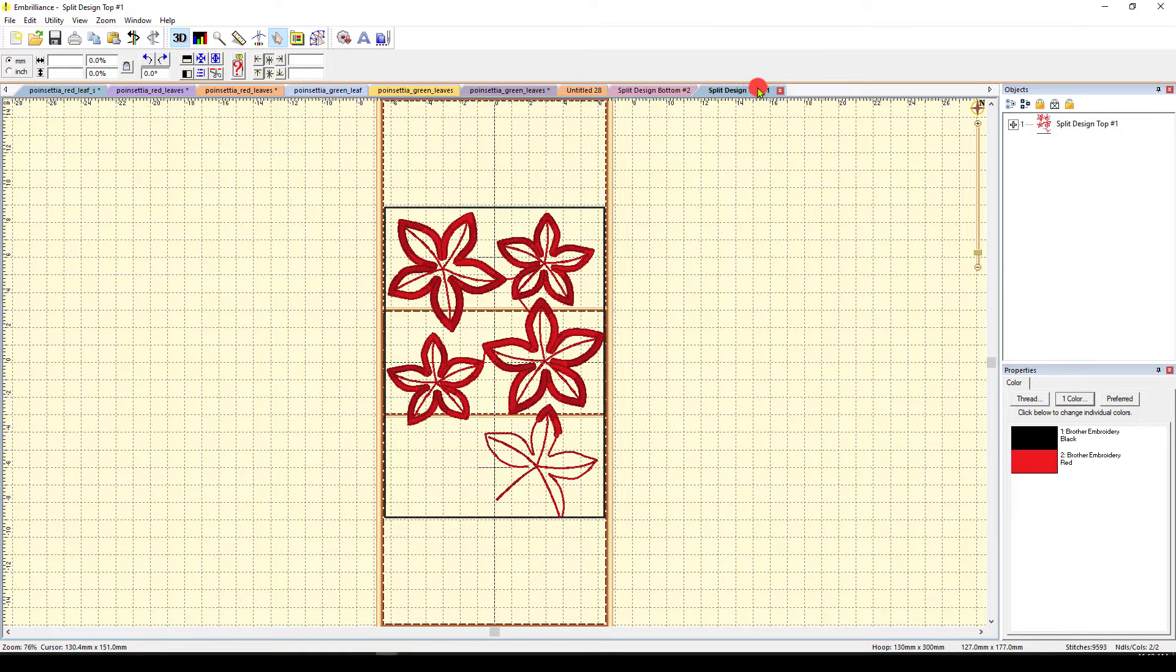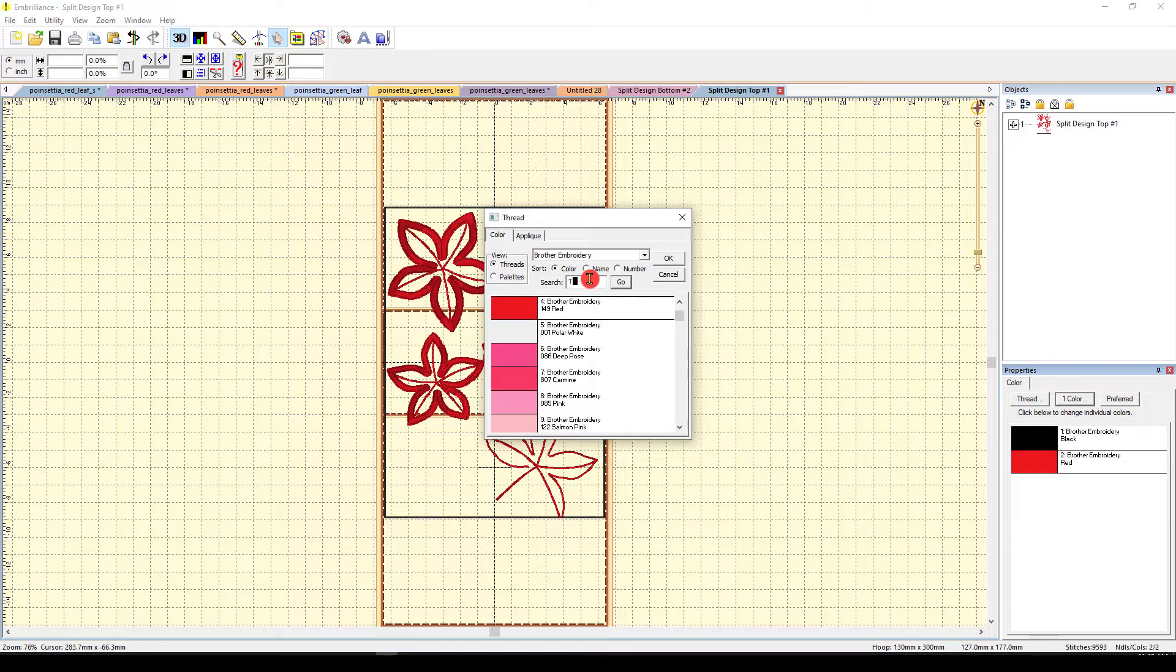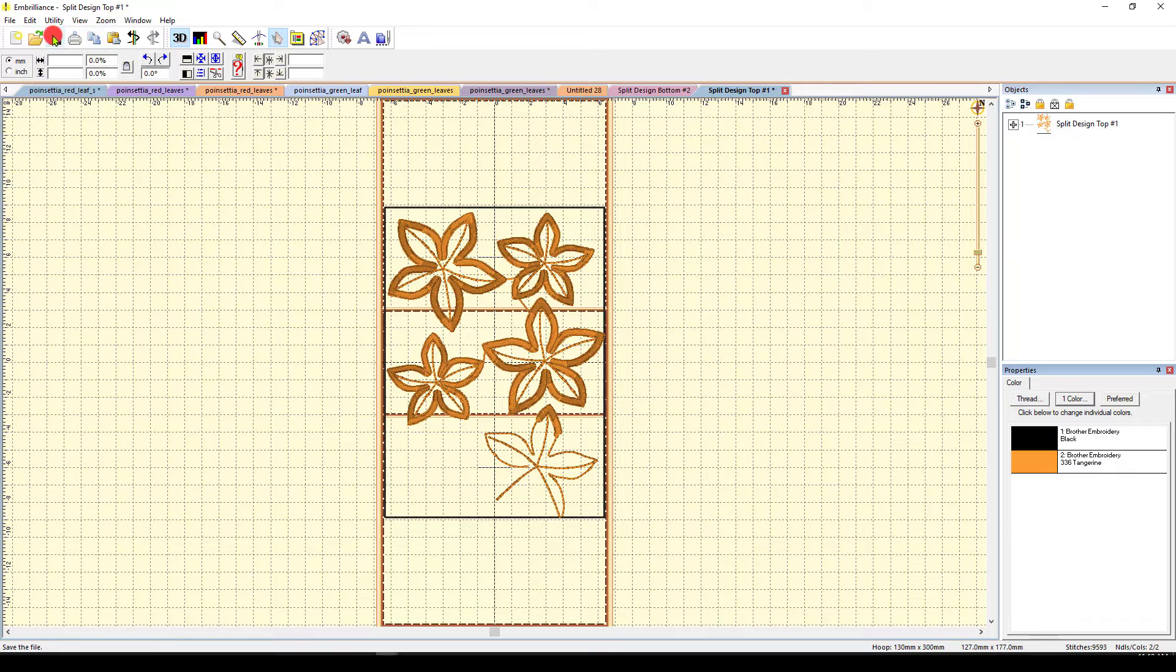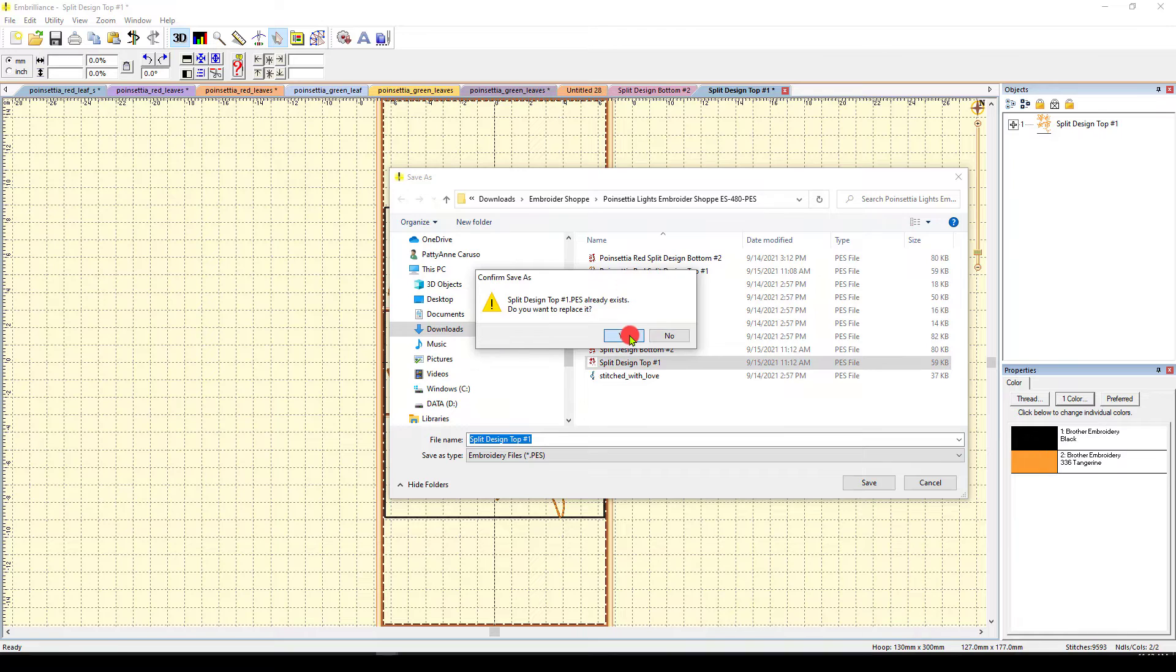But here's what I do. This is the top file, right? So what I'm going to do is I'm going to make sure that the color here is a word that starts with T for top. So I'm going to change this color to tangerine. What I did was I clicked over here in the red color that brought up this thread box. I have Brother Embroidery that just comes up selected. I changed it to tangerine and said go. And there's a tangerine. It's going to change it all to tangerine. I'll say okay. And then I'm going to save that as split design number one top.